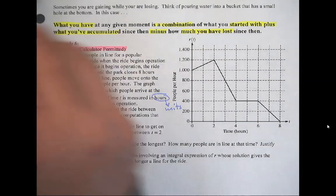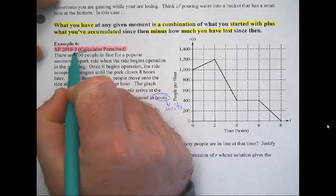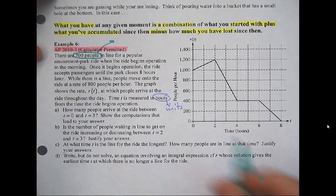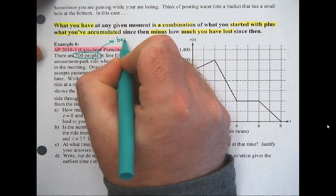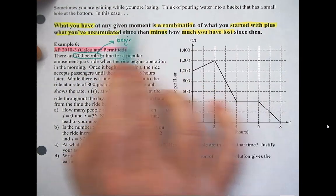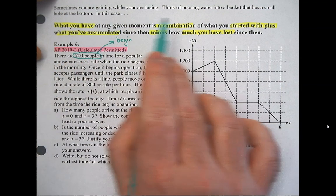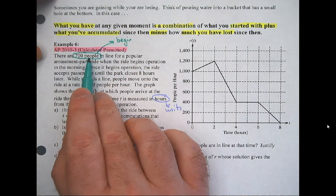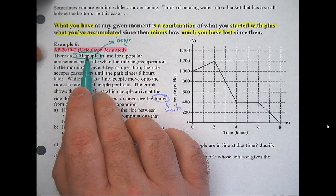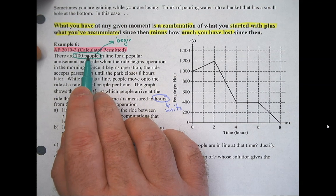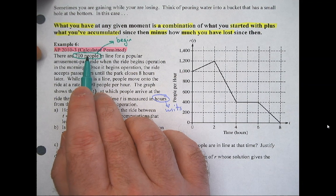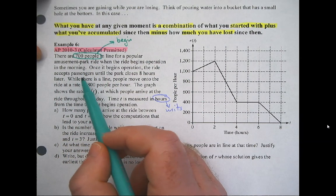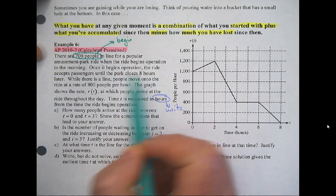They tell us there are 700 people in line — that's the beginning, that's what we started with. We had 700 people in line before they ever opened the ride. The ride begins operation in the morning and accepts passengers until the park closes eight hours later. That makes sense — the line isn't getting any longer at eight because they stopped, no one is showing up anymore, because that's what r(t) represents.